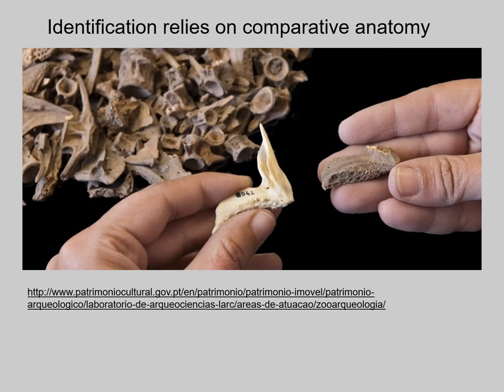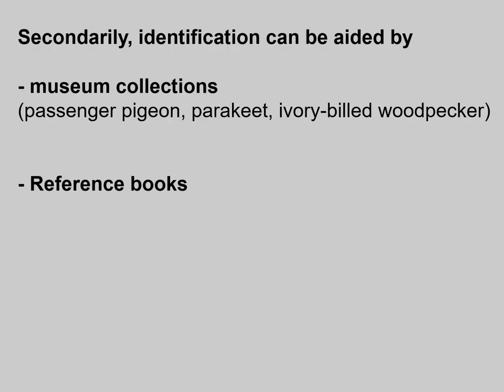Identification relies on comparative anatomy. On the left, the person is holding a fish jawbone, and on the right, the archaeological specimen that looks the same. Secondarily, identification can be aided by museum collections, particularly when the animal is now extinct, such as passenger pigeon, parakeet, or ivory-billed woodpecker. You may also look at reference books, but in the end you must look at a comparative collection.